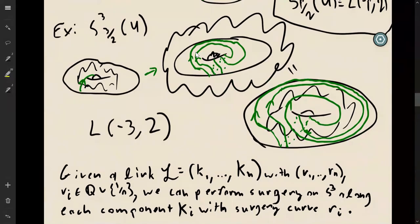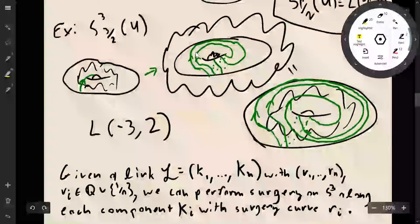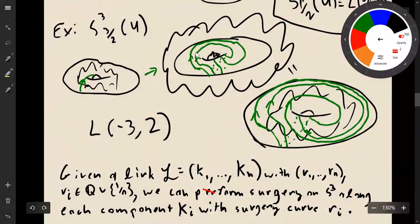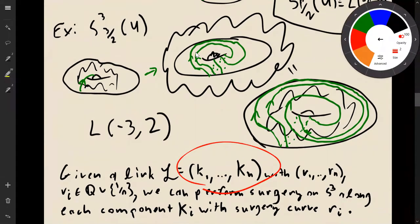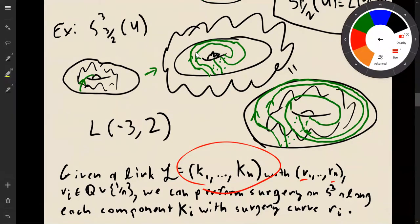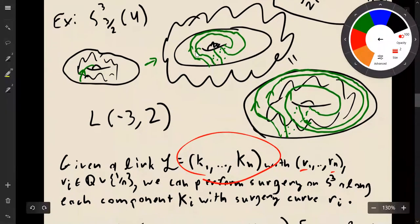Now we know how to do surgery on a knot; there is a natural way to extend this to surgery on a link. For a link with n components, we just pick surgery instructions p_i/q_i for each component. So if we pick one rational number (with 1/0 included) for each component, we can perform surgery on each one.